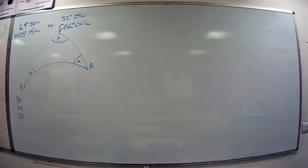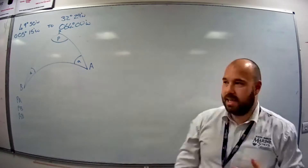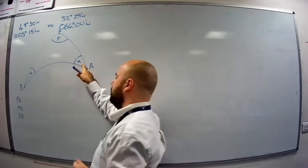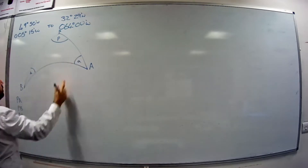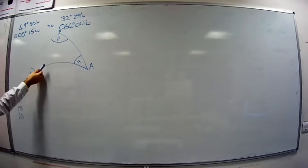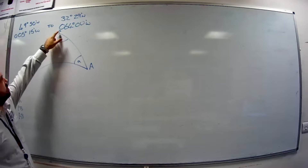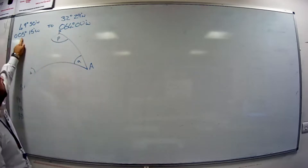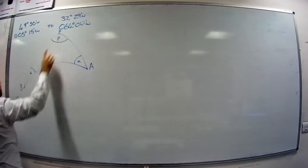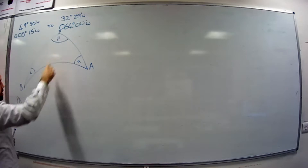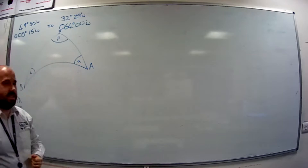If there are two letters it is always a distance — it will come out in degrees and then we can multiply by 60 to get a distance in nautical miles. One letter will always be an angle. So angle A will be our initial course, angle B will be our final course as the vessel's coming in, and angle P will be the angle at the pole between the two meridians. This angle is also classed as D-Long.